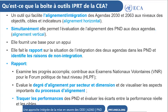What is the box of tools for planning and production of IPART? It is a tool that facilitates the alignment or integration of Agendas 2030 and 2063 at the level of objectives, goals and indicators. We are talking about horizontal alignment.